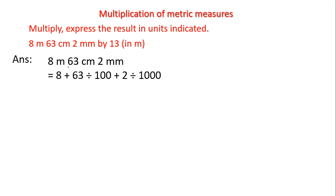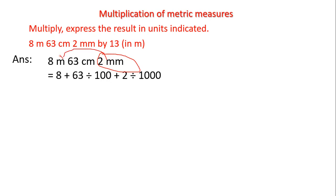To convert 63 centimeters to meters, I will divide by 100, because 1 meter equals 100 centimeters. We are converting from a lower unit to a higher unit, so we divide. Similarly, we convert 2 millimeters to meters by dividing by 1000, because 1 meter equals 1000 millimeters.